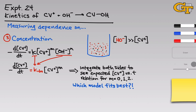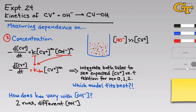To determine the order n with respect to hydroxide, we ask how K-obs varies with hydroxide concentration. The trick is to use multiple runs, each with [OH−] much greater than [CV+], but varying the constant hydroxide concentration between runs. For example, if we double [OH−] and K-obs doubles, then n equals 1. If K-obs quadruples, n equals 2. And if K-obs does not change at all when we double [OH−], then n equals 0.